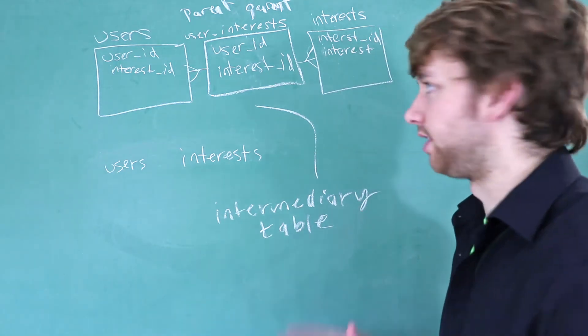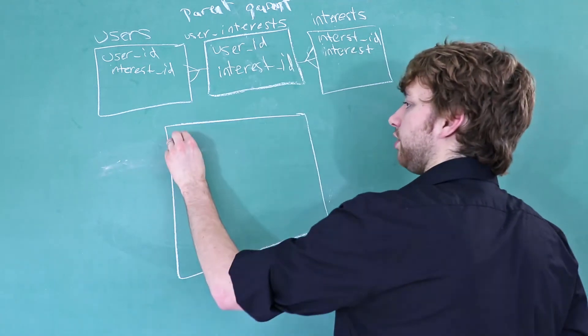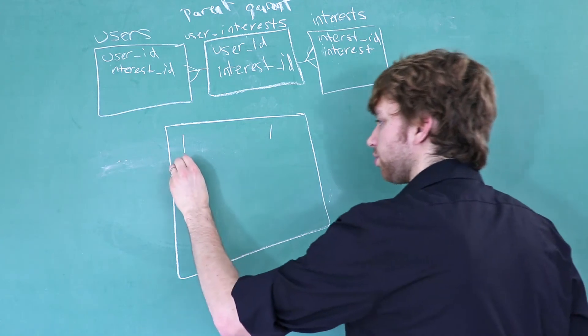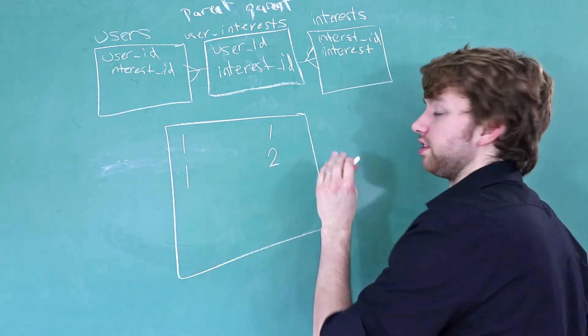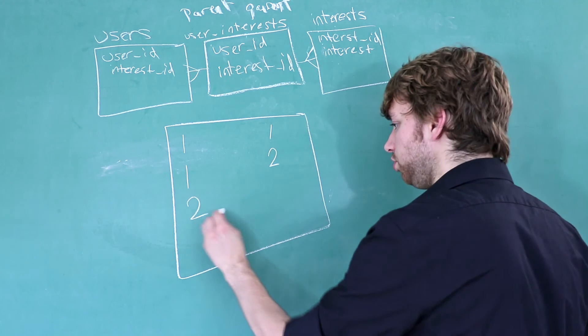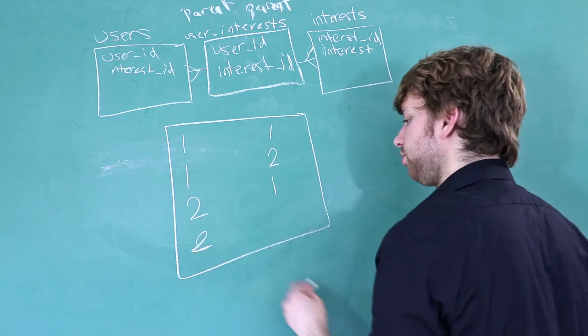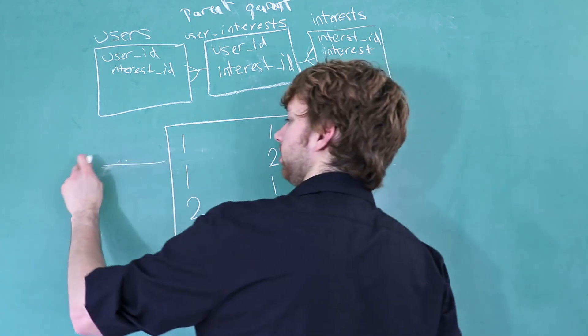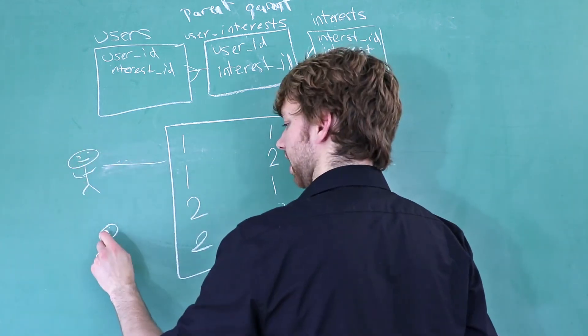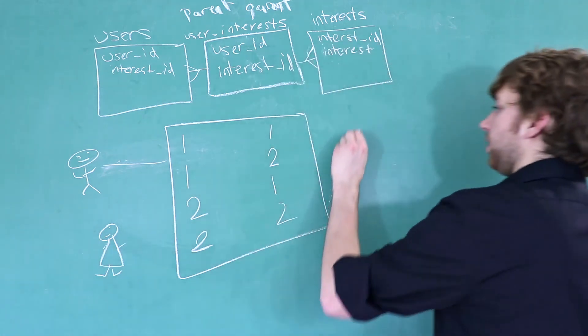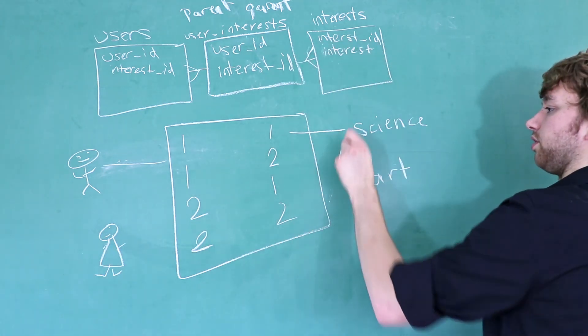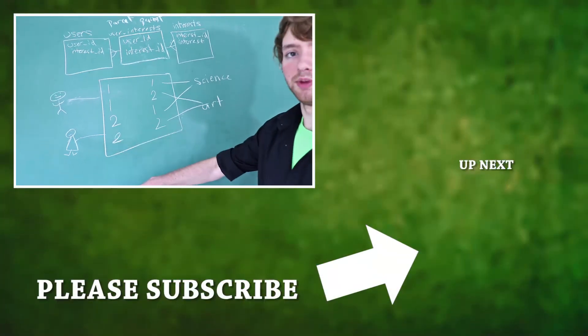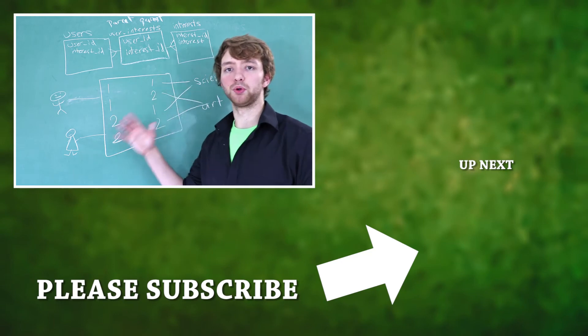Let's just look at what this might look like inside of this table. We might have it where user one is interested in interest number one. User one is interested in the interest number two. User two is interested in interest number one. And user two is interested in interest number two. So if you want to see this a little bit more clearly, we can say this is this guy over here, and this is this gal over here, and we have two interests over here. So this one is going to reference the science, and the two is going to reference the art. This kind of shows the many-to-many relationship, and this is the proper way to structure it.